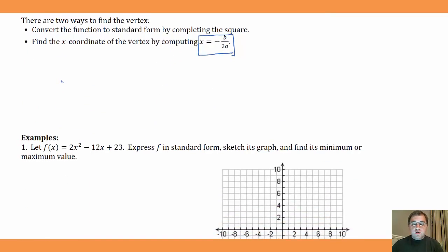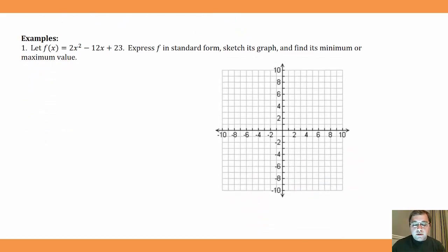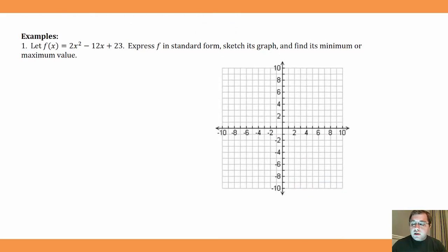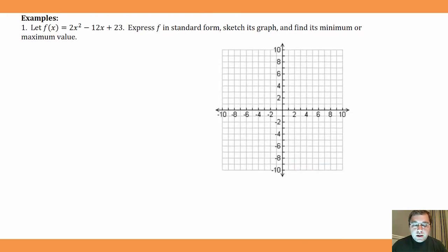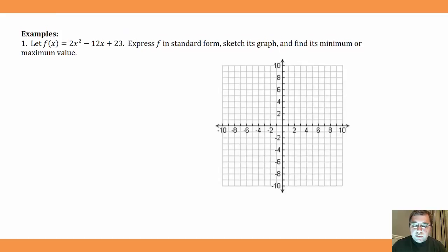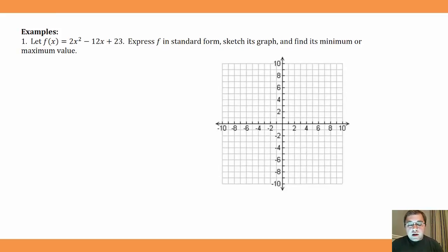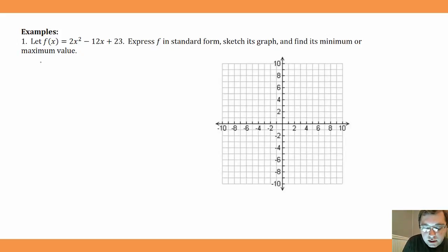We're going to do those two different methods — one on the first example and the other on the second. On the first one we're going to rewrite the function in standard form by completing the square, and then we'll be able to pick out the vertex. Let f(x) = 2x² - 12x + 23. Express f in standard form, sketch its graph, and find its minimum or maximum value.